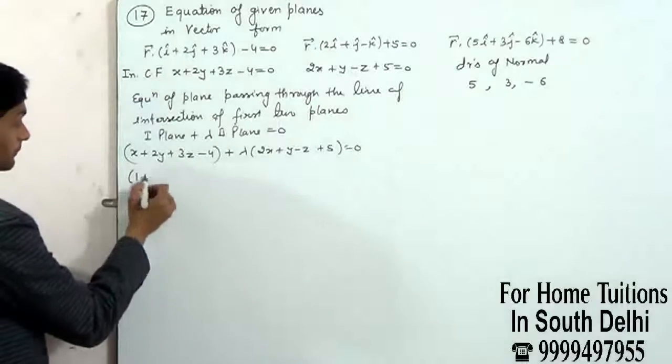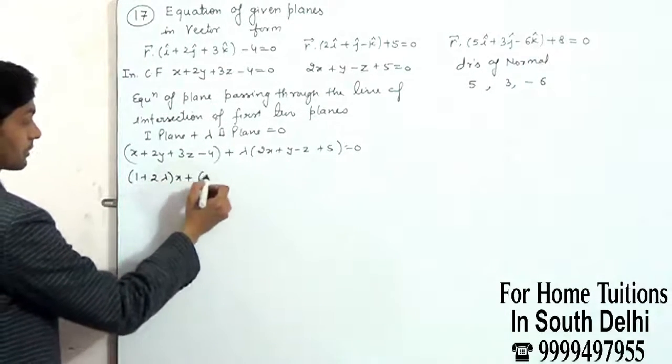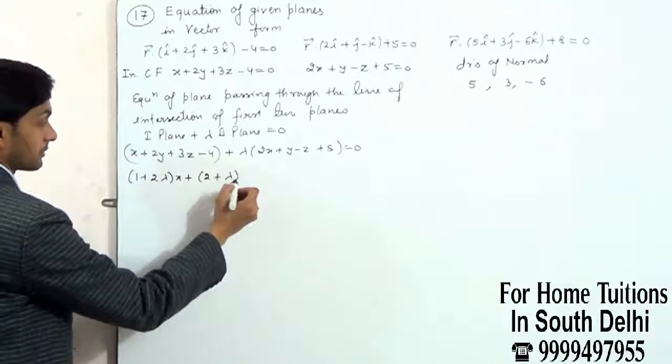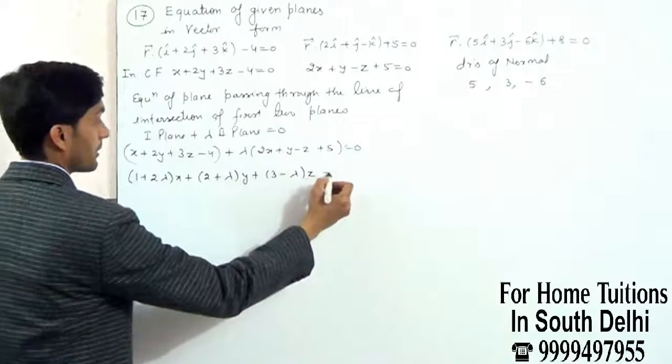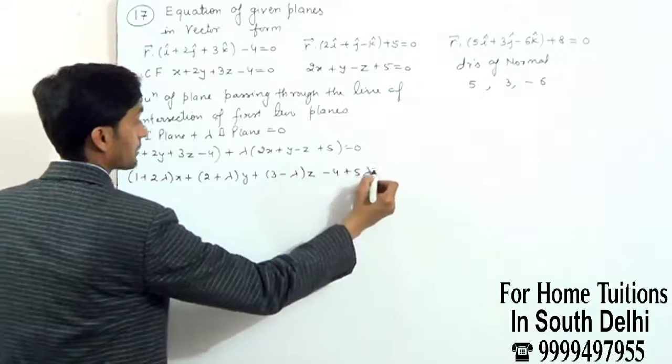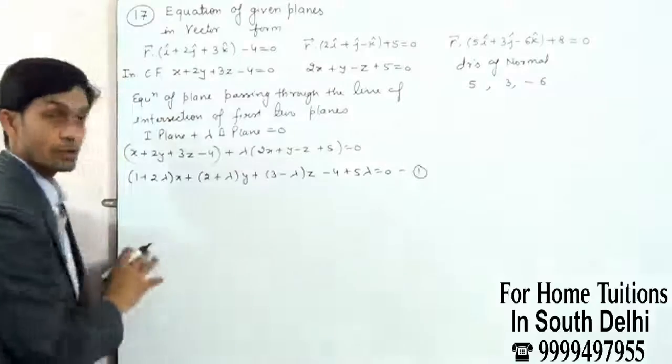X plus 2Y plus 3Z plus lambda times (2X plus Y minus Z).